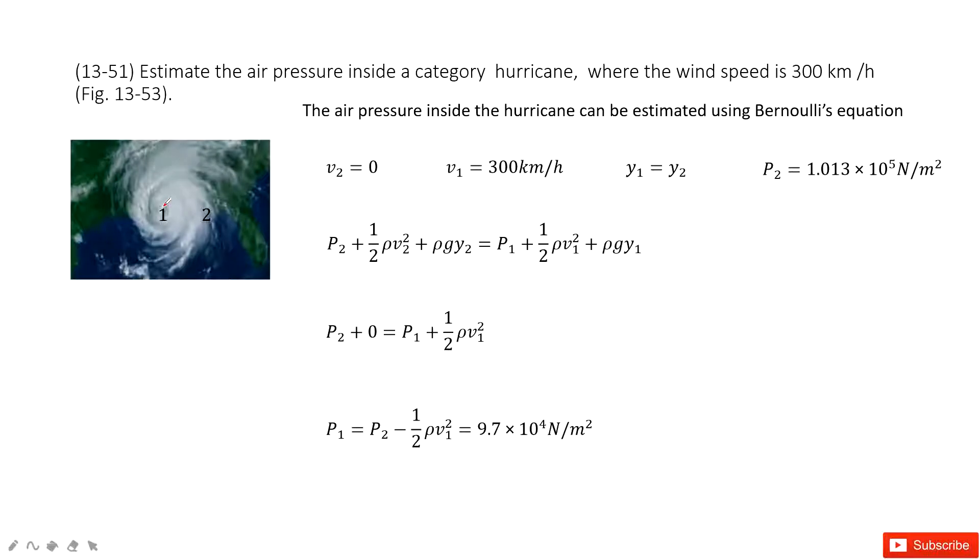We can consider the center of this hurricane as position 1 and the boundary of this hurricane as position 2. At position 2, the velocity for the wind equals 0 because there is no wind anymore. And Y1 equals Y2, they are at the same height.